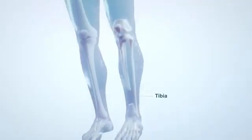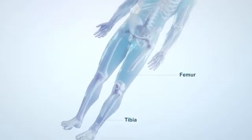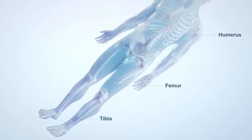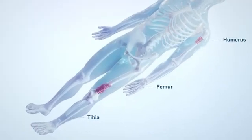The graft cage maintains the morselized bone graft's position within voids or resections in non-articular regions of the humerus, femur, or tibia.